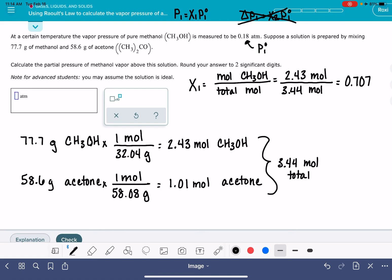So now we have everything that we need to calculate the partial pressure of the methanol, the mole fraction of methanol, which is 0.707, no units, and the original vapor pressure, which is 0.18 atmospheres. Our new pressure is 0.127 atmospheres. It says we want two significant figures, so that's going to be 0.13. Thanks, everybody.